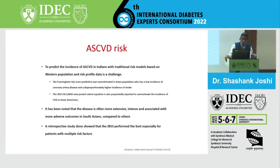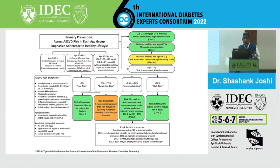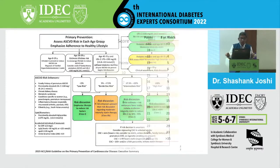Retrospective data shows JBS-3 performs best in people with multiple risk factors. The risk calculator from ACC-AHA 2019 allows triaging of age groups - below 19, 20 to 40, 40 to 75, and above 75 - into high, intermediate, borderline, and low risk. ASCVD risk enhancers include family history, premature atherosclerotic vascular disease, persistent LDL elevation, chronic kidney disease, metabolic syndrome, and South Asian ancestry.